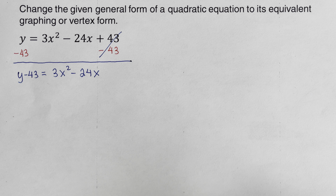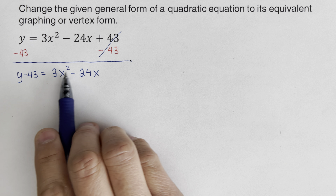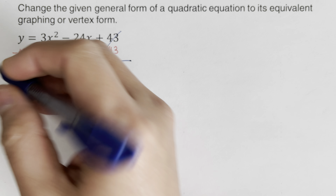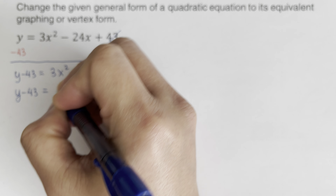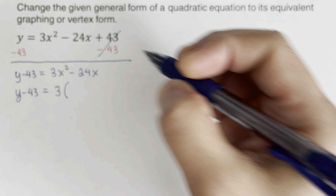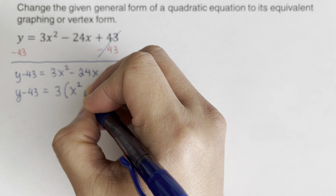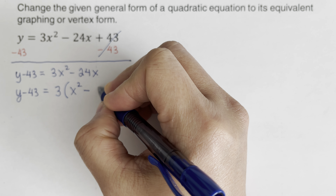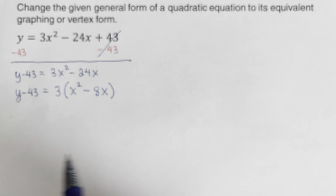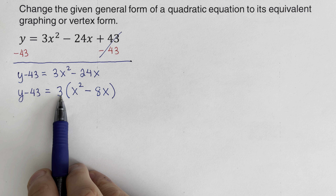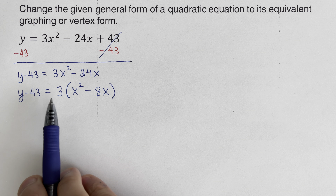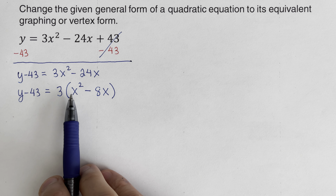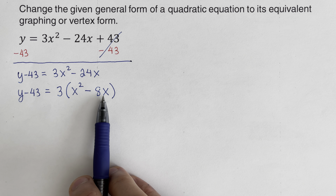Next, in order to complete the square we need just x by itself, but there is a coefficient of 3. So we factor out the 3: y minus 43 equals 3 times (x squared minus 8x). We can verify this using the distributive property: 3 times x squared is 3x squared, and 3 times negative 8x is negative 24x.